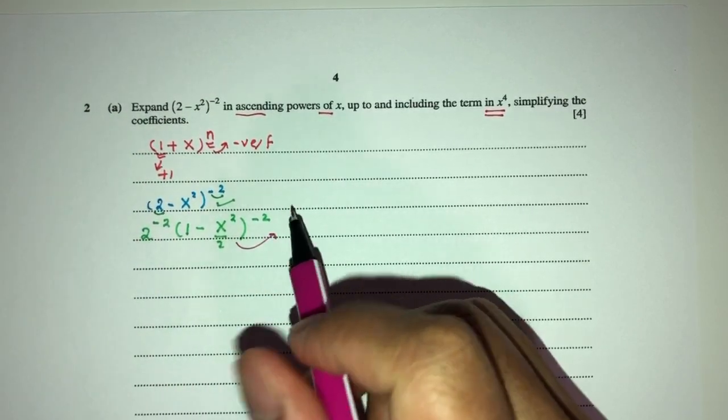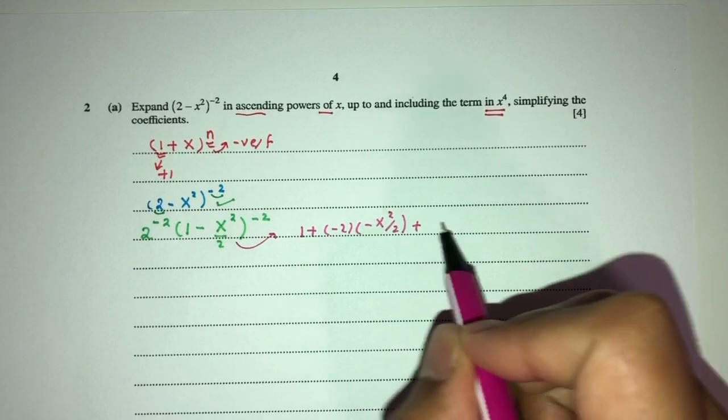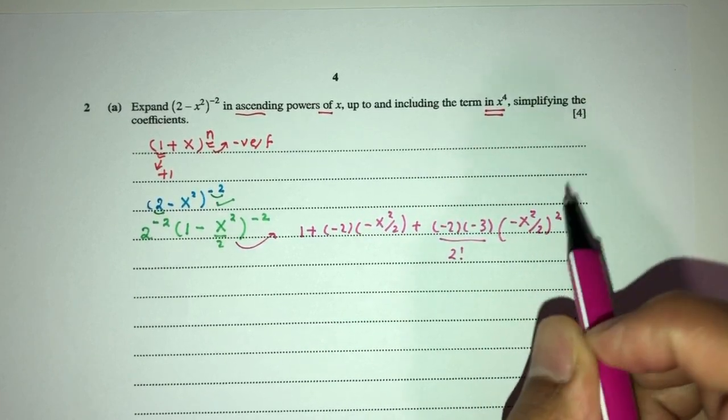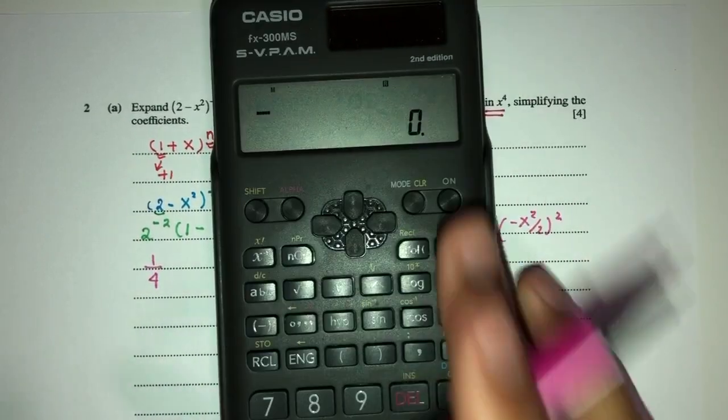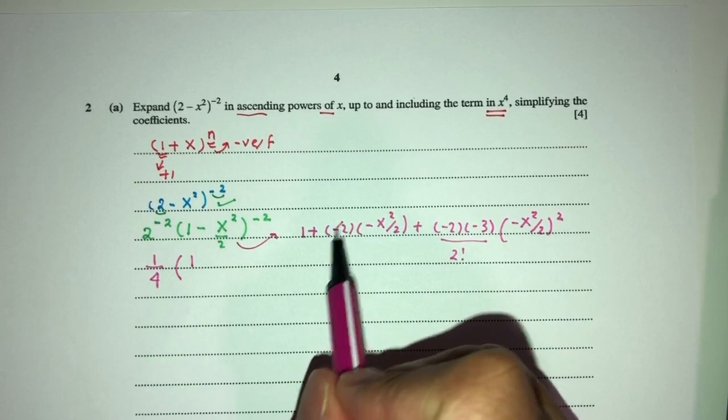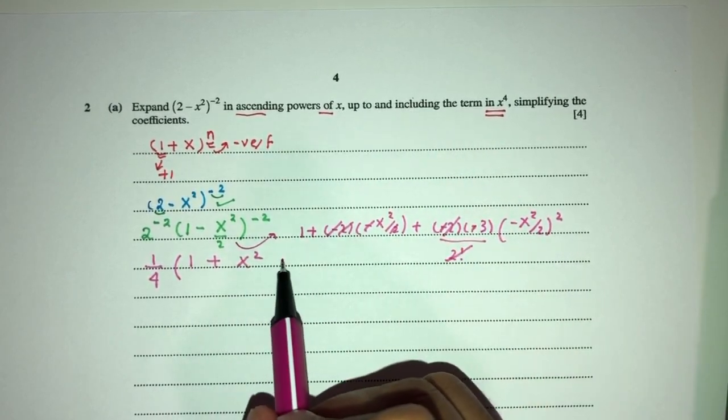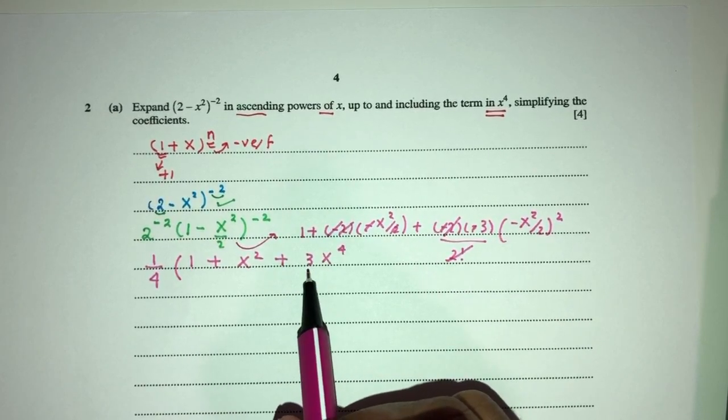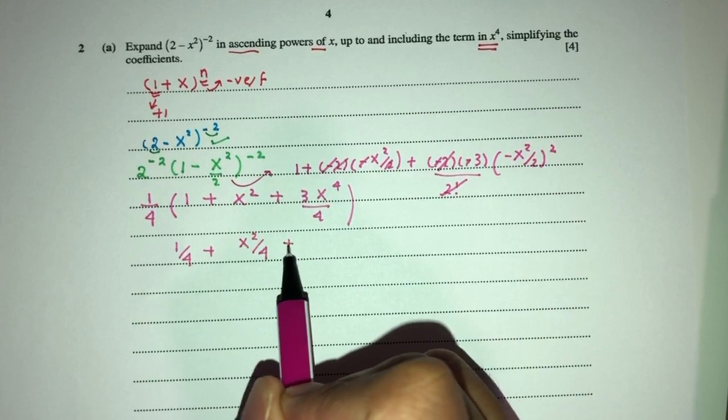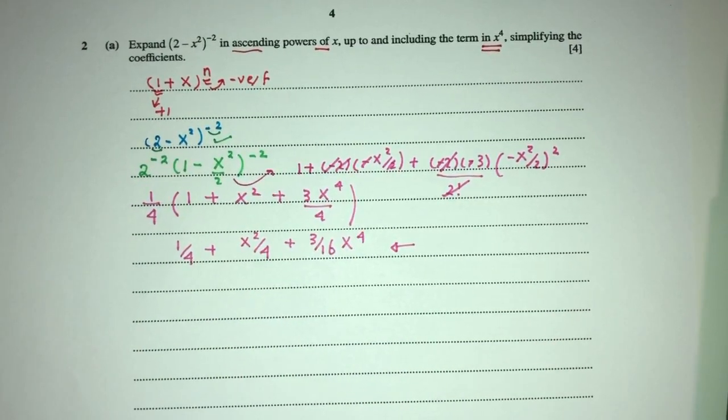Now we can expand. That will become 1 plus minus 2 times the value over here minus x squared over 2. Plus minus 2 times minus 3 divided by 2 factorial times the minus x squared over 2 squared. Now this is 1 over 4, obviously. 2 power minus 2, 1 over 4. Now simplify. That will be 1. Cancel, cancel, plus x squared. This will go over with this one. That will become plus 3x power of 4 over the value of 4. Now simplify. You will have 1 over 4 plus x squared over 4 plus 3 over 16x power of 4. And this is your expansion of this expression up to 2x power of 4, part 1.